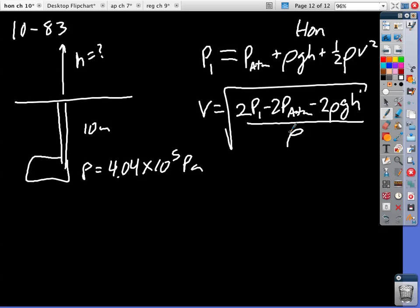All right, so 2 times the pressure, which is 4.04 times 10 to the 5th minus atmospheric, which is 1.01 times 10 to the 5th minus rho, which is 1,000 times 10 times 10 divided by 1,000.